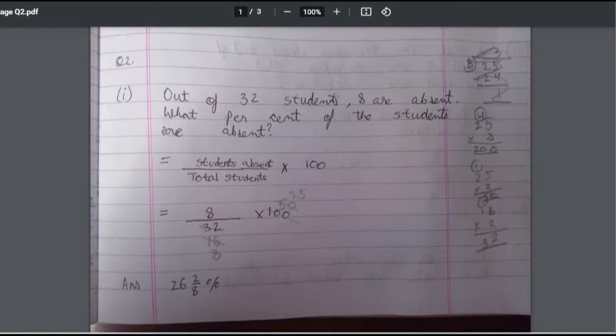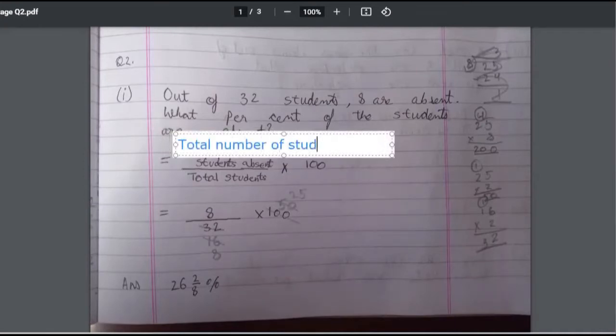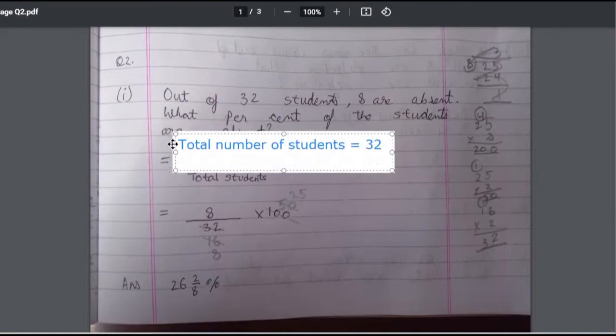Yes sir. Before even starting the question you should write some statements. Number of students equals 32. Fine. Number of students absent equals 8. Is this thing clear?